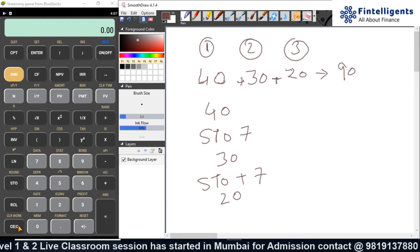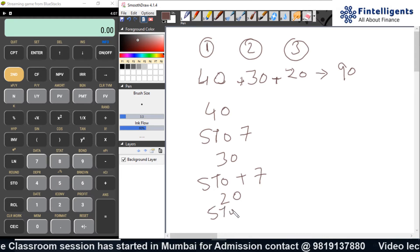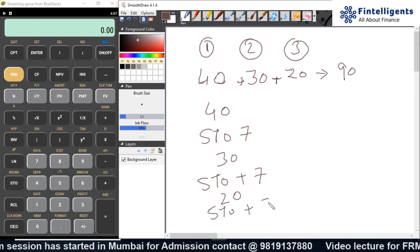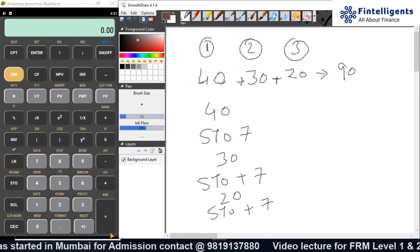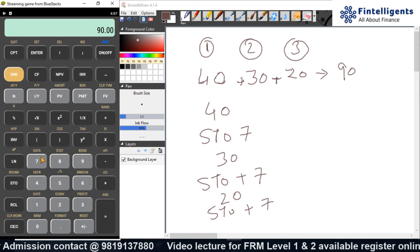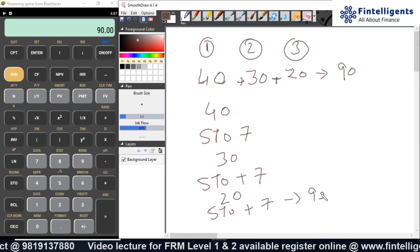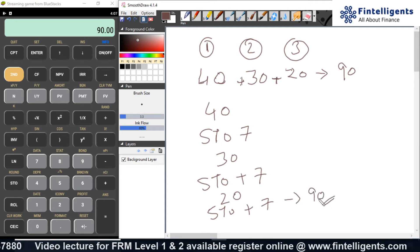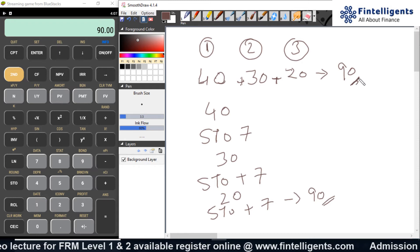I will have to do STO plus 7. That means I did STO plus 7. And let me quickly check what is the number that is stored in 7. That is your 90.